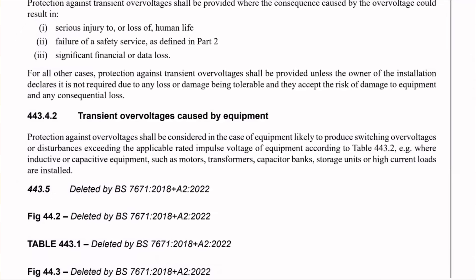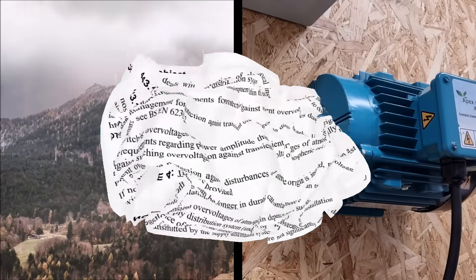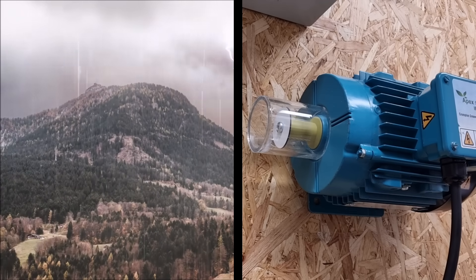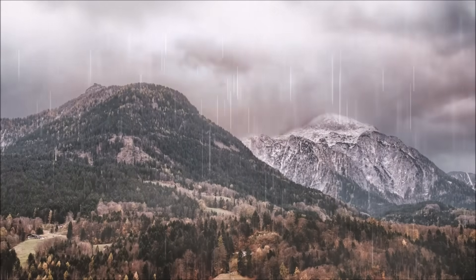However, an interesting point to note is that in regulation 443.1.1, which outlines the scope and object of this section of the regs, it has this sentence: in general, switching overvoltages have lower amplitude than transient overvoltages of atmospheric origin, and therefore the requirements regarding protection against transient overvoltages of atmospheric origin normally cover protection against switching overvoltages. So what this is saying is that surges caused by lightning strikes on the supply system are usually more severe than surges caused by machinery switching on and off. So logically, if you've protected your installation against lightning-caused surges - which is most likely happening as standard - then chances are you're automatically protected against surges caused by equipment as well.